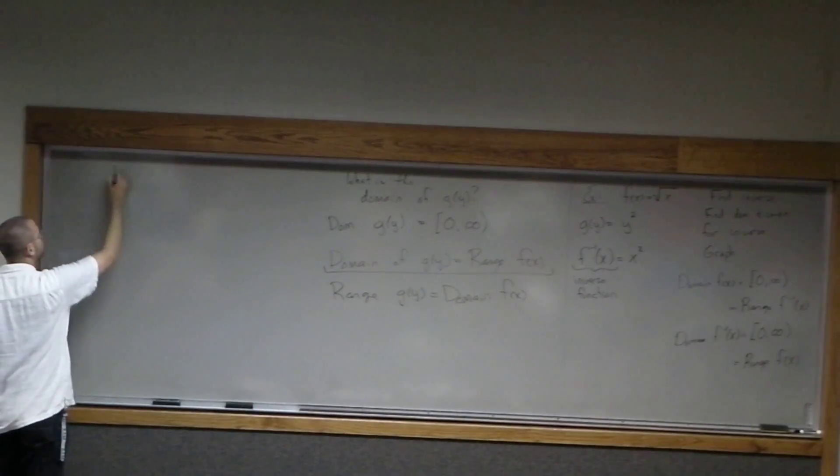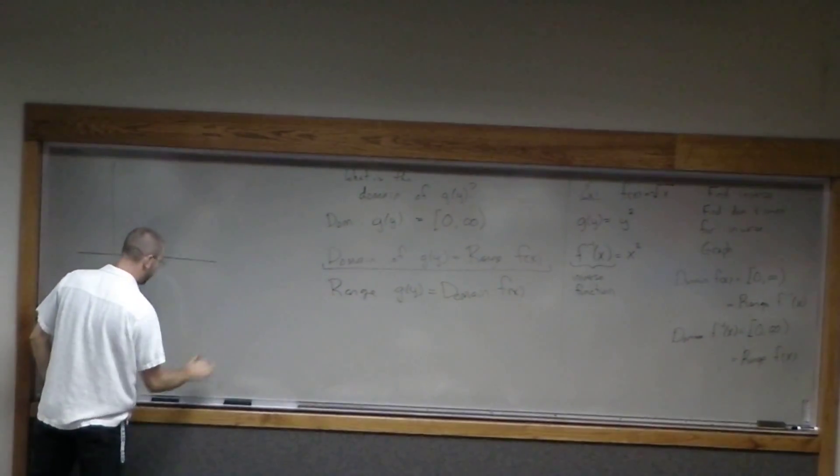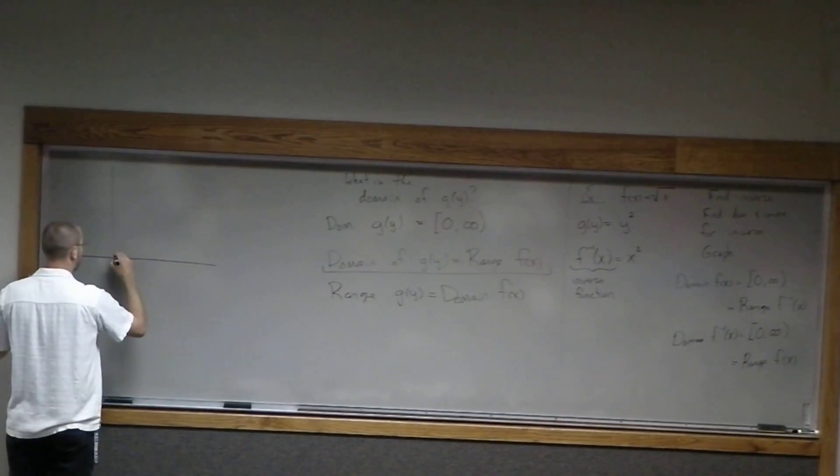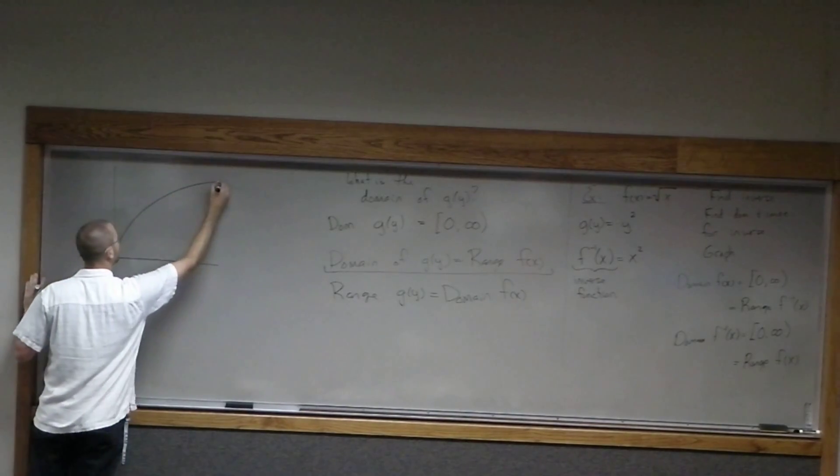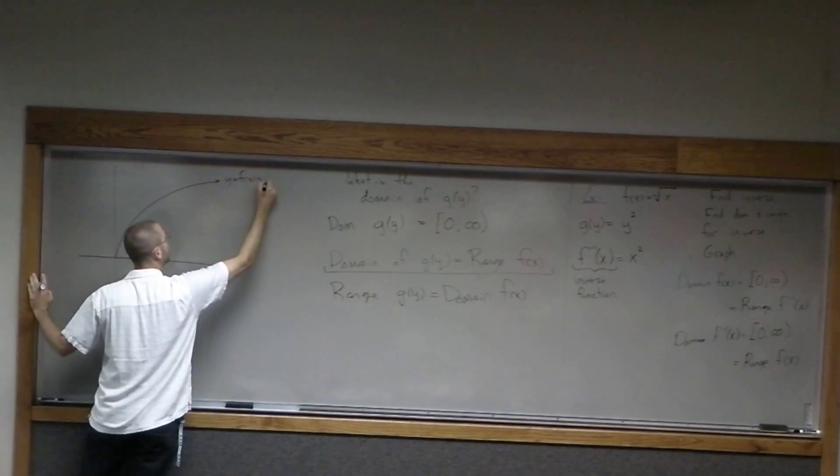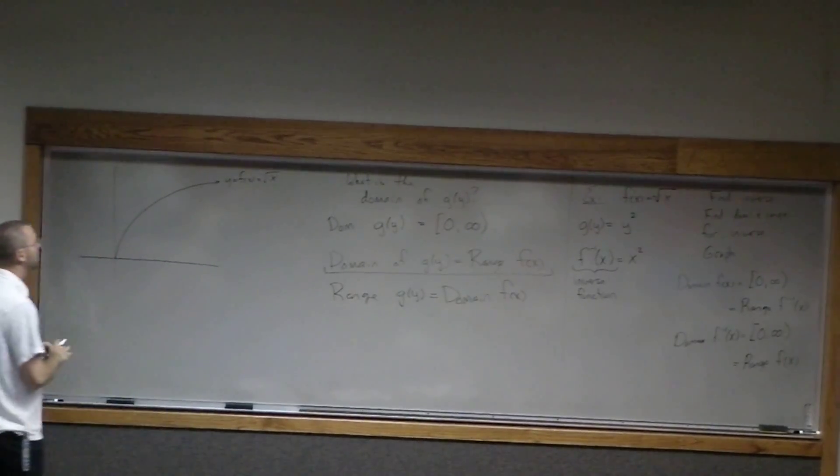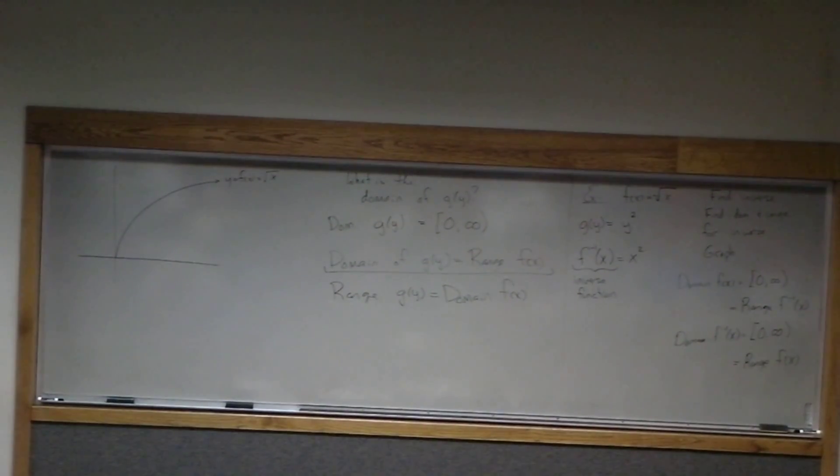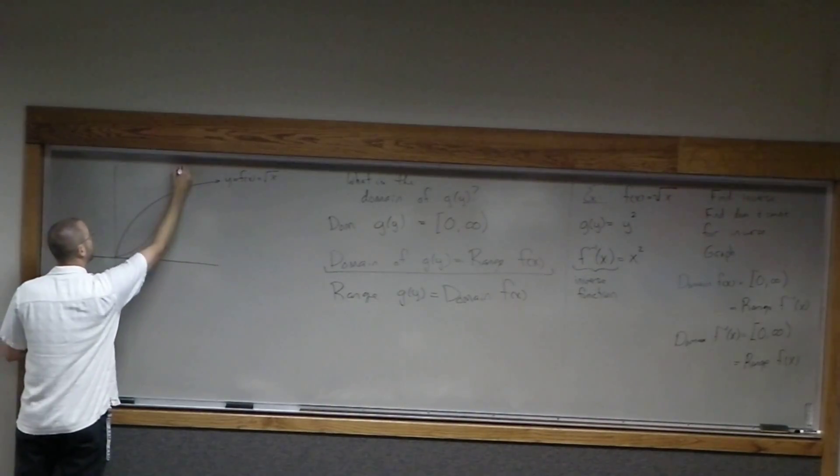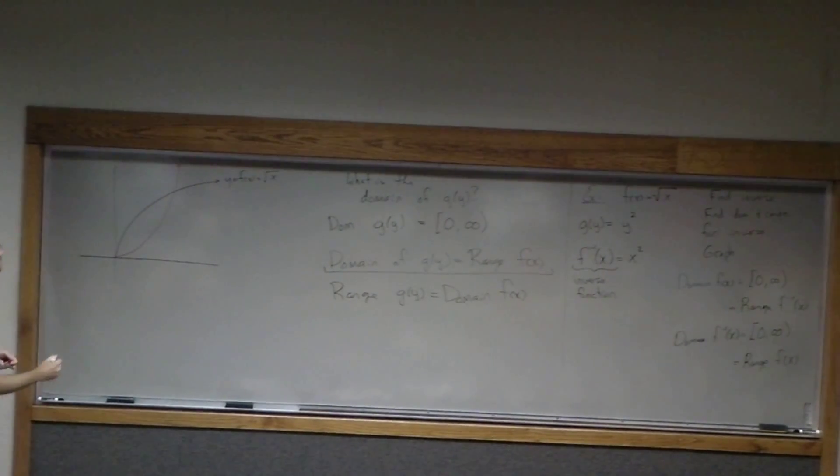And so if we graph this, if we graph the function and its inverse, I'll use two different colors. The original function I'll do in black, square root of x. And then our inverse function is only part of the quadratic. It's only the right-hand part of the quadratic.